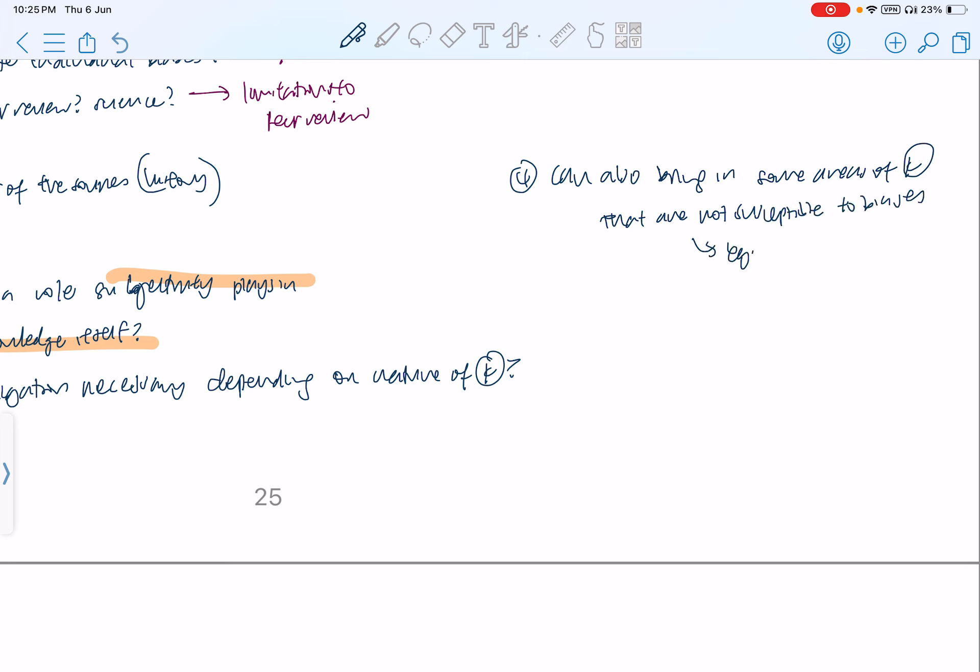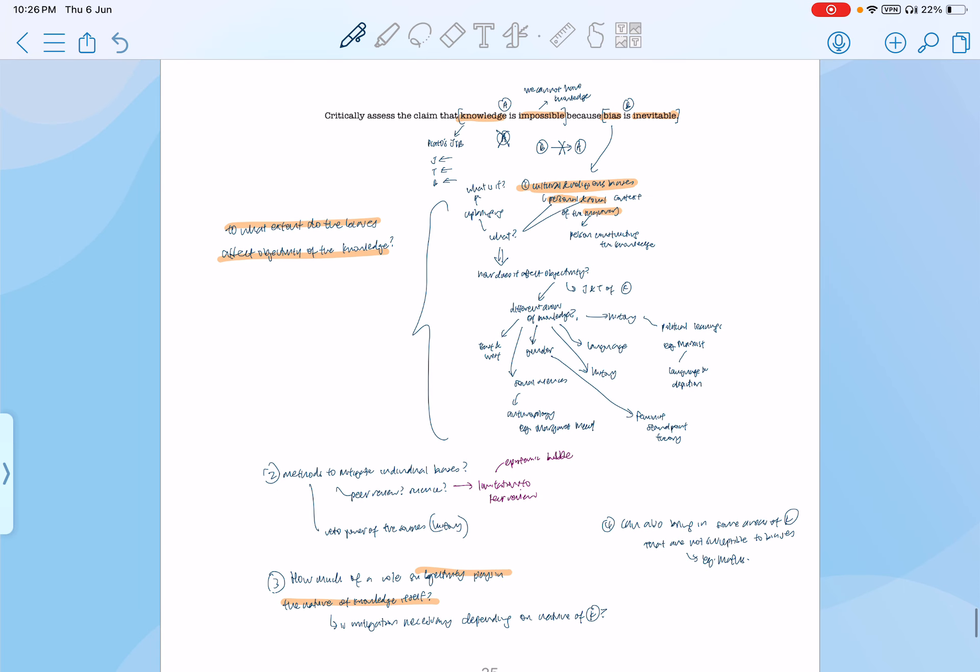And, of course, if you want an extra depth to your answer, you can also bring in some areas of knowledge that are actually not really very susceptible to biases. One that I can think of right now is mathematics. I'm not really sure how you can be biased in mathematics, because one plus one equals two. You can't really debate that. Well, there are different systems of math, like Euclidean geometry, Riemannian geometry, and then now Einstein's relativity that's based on Riemannian geometry. But there isn't really some sort of hidden agenda that mathematicians could have in twisting mathematical knowledge. So, yeah. This is how I could approach dissecting this question. And that's all for today's episode. Hope that you enjoyed it, and see you at our next episode.